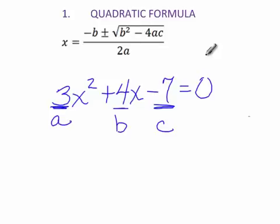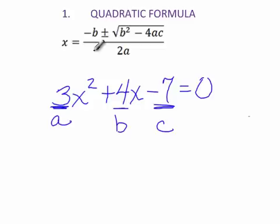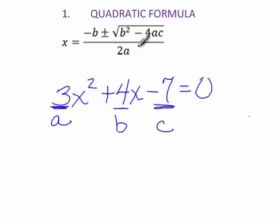You will need to learn the quadratic formula because there are times you'll want to use it to find both x's. I cannot sing, but I will sing this song and I hope it's so annoying you cannot forget it. The quadratic formula: negative b, plus or minus square root, b squared minus 4ac, all over 2a. Negative b, plus or minus square root, b squared minus 4ac, all over 2a.